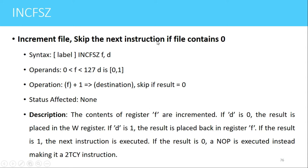The next instruction is INCFSZ, which stands for Increment File and Skip the next instruction if the file contains zero. The syntax is INCFSZ f, d. The contents of the file register are incremented by 1 and checked whether the result is zero. If not zero, the next instruction executes. If the result is zero, the next instruction is skipped. When the value in the file register is 0xFF, executing this instruction rolls the value back to 0x00, the condition becomes true, and the next instruction is skipped.